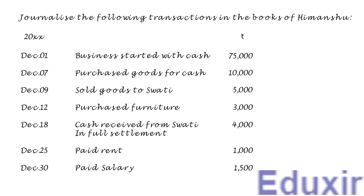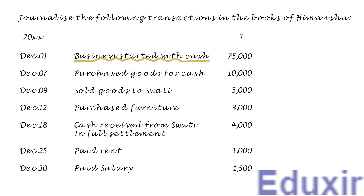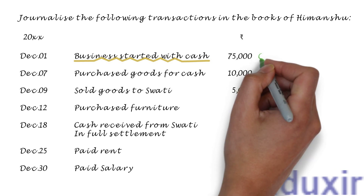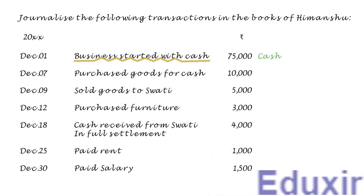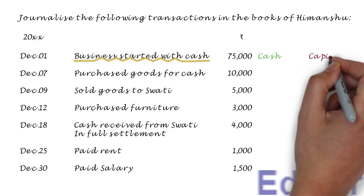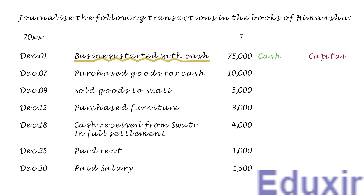In the first transaction, the business is started with a cash of 75,000 rupees. So in this transaction, the cash asset is introduced into the business. In other words, the cash asset of the business is increasing in this transaction. The rule to record any increase in the asset is to debit the corresponding assets account. In this case, the cash account should be debited. Also, as the owner is bringing a cash of 75,000 rupees into the business, it is increasing the owner's equity or capital. The rule to record an increase in the capital is to credit the capital account. With this analysis at our disposal, let us proceed with the journalizing of this transaction.